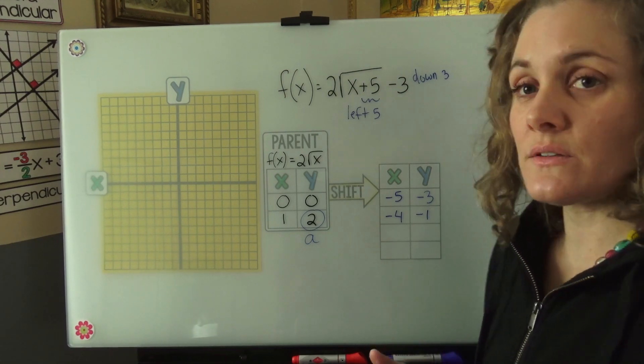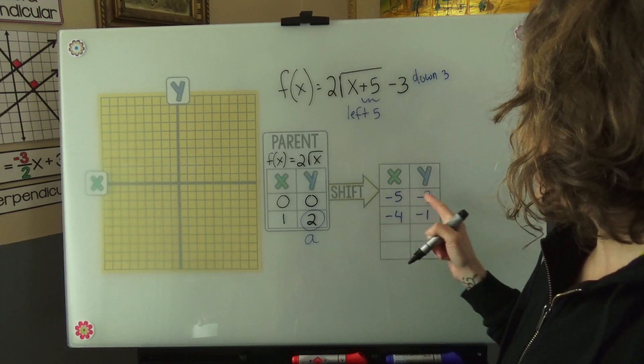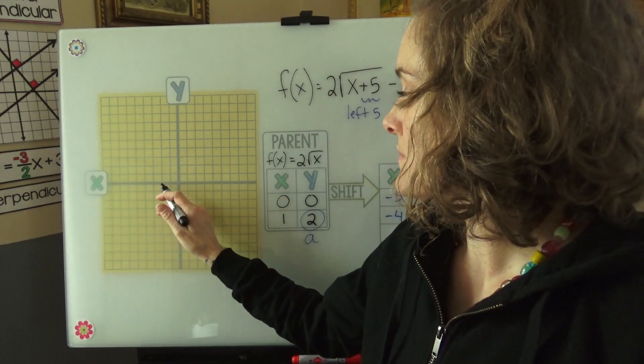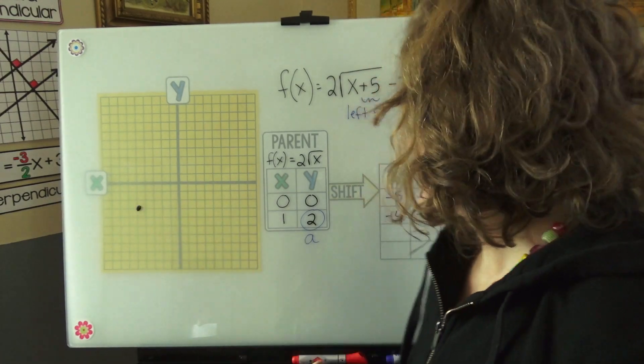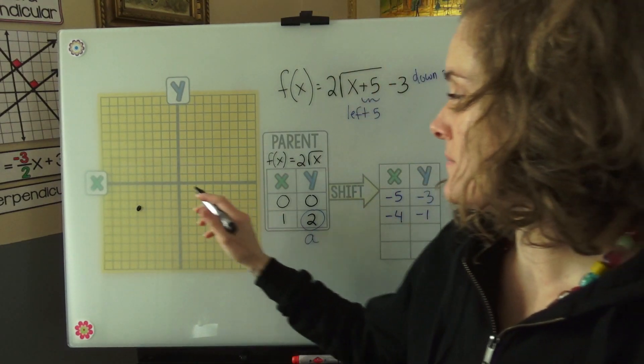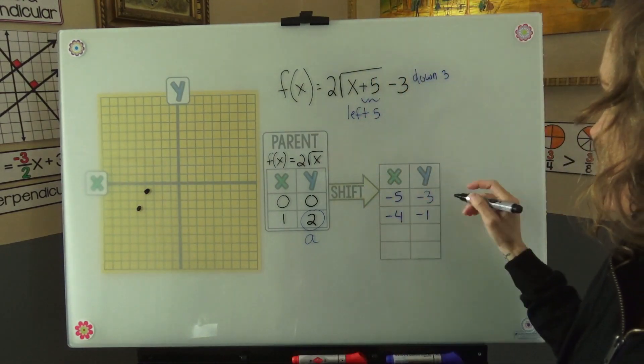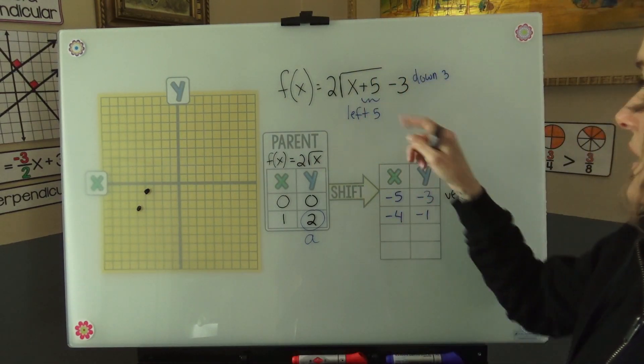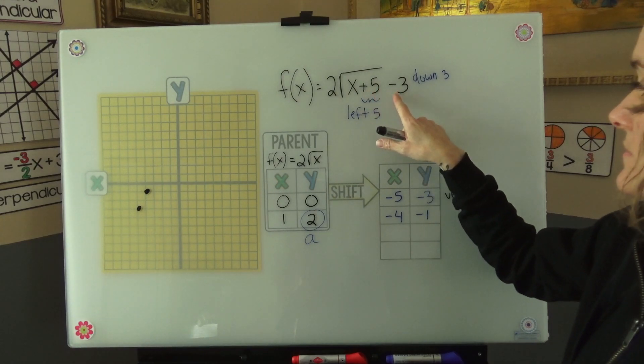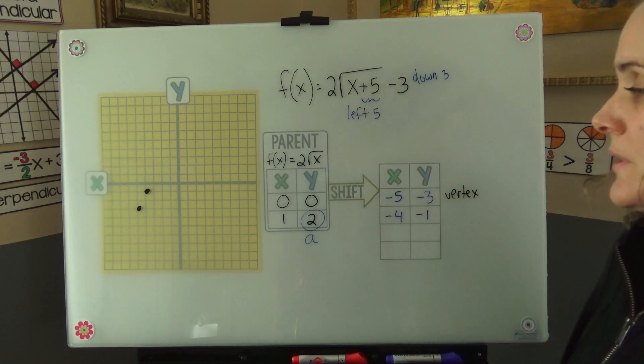So now we can plot these points, negative 5, negative 3. And negative 4, negative 1. This is our vertex. And we can see that in here. And this is our next point as we go up.